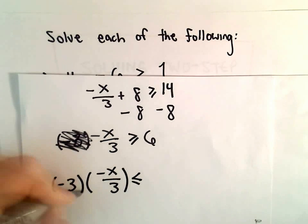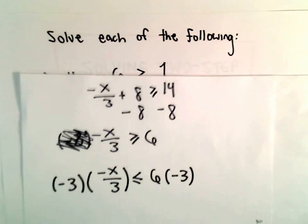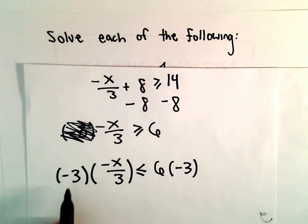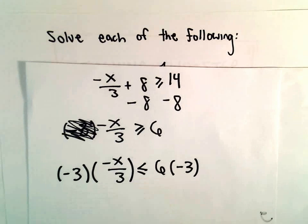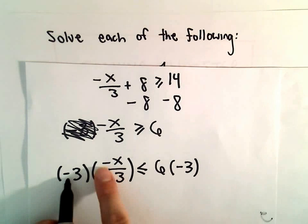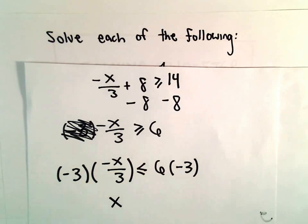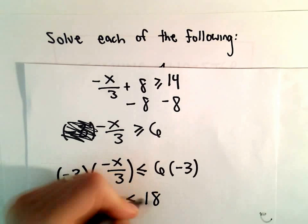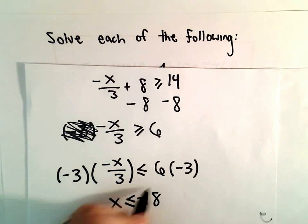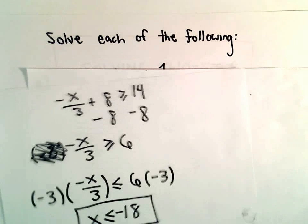Since we're multiplying or dividing by a negative, we end up having to flip the inequality. A negative times a negative is a positive, and 3 over 3 would be 1, so we're left with 1x on the left side, which would be less than or equal to 6 times negative 3, which would be negative 18. So our solution would be x is less than or equal to negative 18.